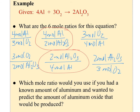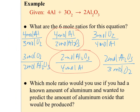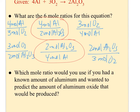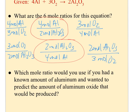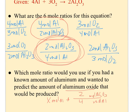For example, which mole ratio would you use if you had a known amount of aluminum and wanted to predict the amount of aluminum oxide? I'm going to put x moles of aluminum as what I have, and I want to predict the amount of aluminum oxide. That means I should be putting moles of aluminum oxide over moles of aluminum — a ratio of 2 over 4, so I'm cutting my amount in half. This is the molar ratio I would use to make that prediction.